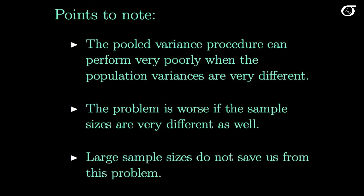Another important point: large sample sizes do not save us from this problem. Large sample sizes save us from non-normality through the central limit theorem, but they don't help here. If one group has 10,000 observations and another has 50,000, but there's a big difference in population variances, the pooled t-procedure is simply going to perform very poorly.